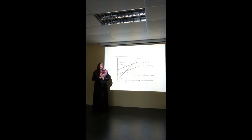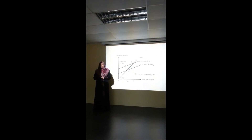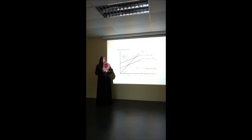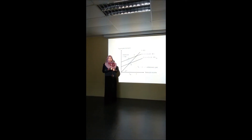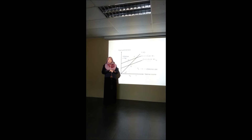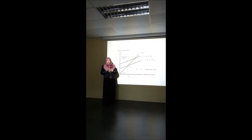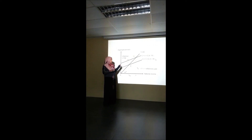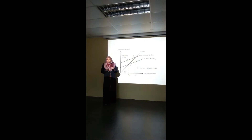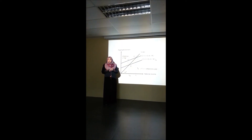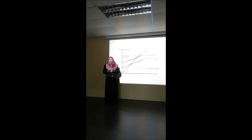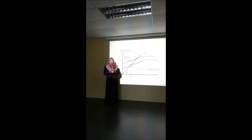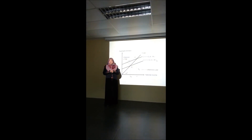The diagram shows the inflationary gap, where the vertical distance is between full employment income FE and aggregate expenditure. The aggregate expenditure cuts the 45-degree line at point E, where A is located to the right side and above B, which is the intersection of the 45-degree line with the full employment line Y. So the inflationary gap occurs at point E.